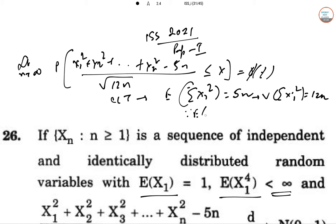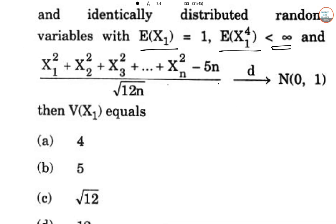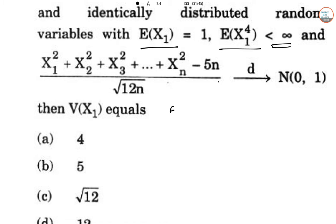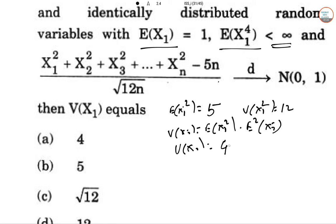E(X_i) = 1 is given, so E(X_i^2) will be 5 and V(X_i^2) is 12. Therefore, V(X_i) = E(X_i^2) - [E(X_i)]^2 = 5 - 1 = 4. So option A is correct.